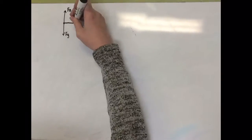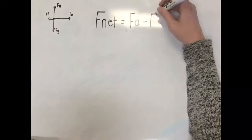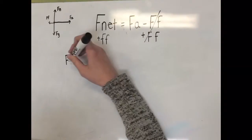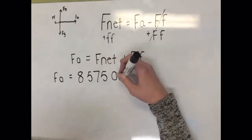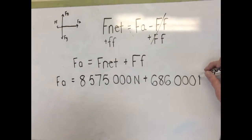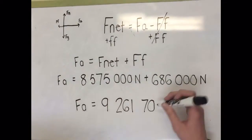Since the force diagram for the train would look like this, then it's clear that the force applied would have to be bigger than the force of friction, so that would make the equation F net equals Fa minus Ff, rearranged to be F net plus Ff equals Fa to solve for the applied force.